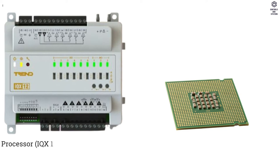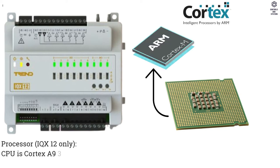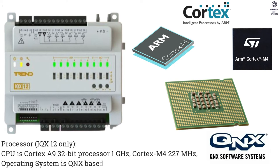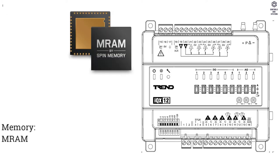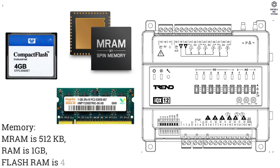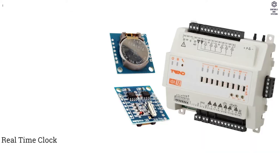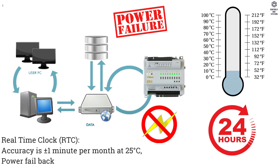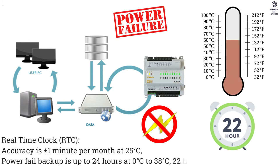Hardware Data — Processor (IQX12 only): CPU is Cortex-A9 32-bit processor at 1 GHz, and Cortex-M4 at 227 MHz. Operating System is QNX-based. Memory: MRAM is 512 KB, RAM is 1 GB, Flash RAM is 4 GB. Real-Time Clock (RTC) accuracy is ±1 minute per month at 25°C. Power fail backup is up to 24 hours at 0°C–38°C, and 22 hours at 38°C–50°C.